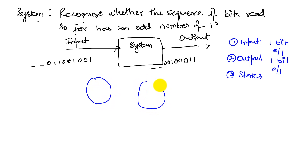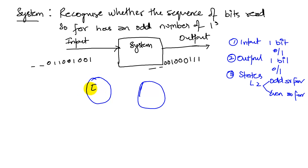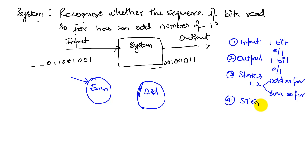I'll describe the two states with circles. There are two states: one represents having seen an odd number of ones so far, and the other represents an even number — I call them the even and odd states. I start my system in the even state because I haven't read anything yet, and zero ones is even. I designate the initial state by drawing an arrow into it. Now I have to do the state transition — this is my fourth step, which is a state transition graph. The STG has nodes, which are circles, and arrows.